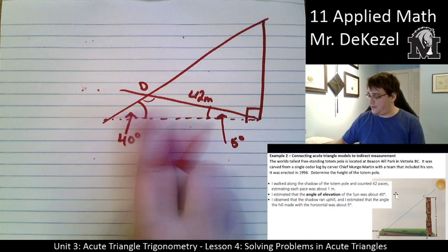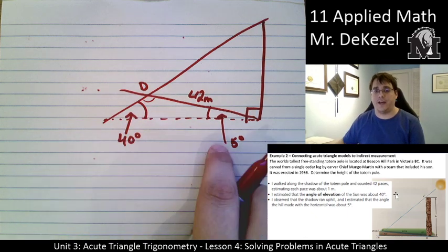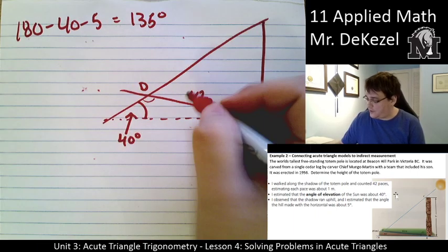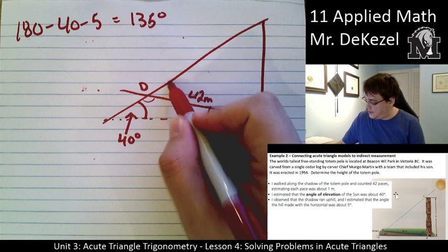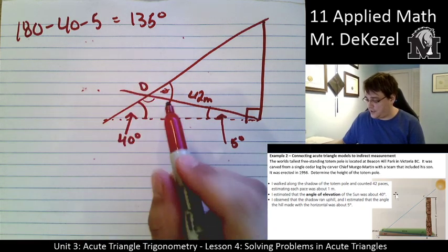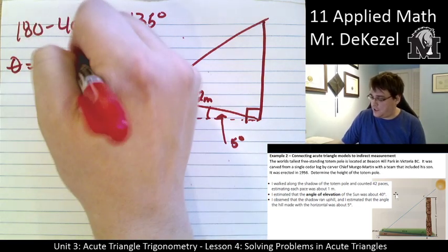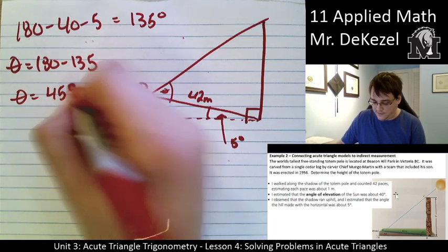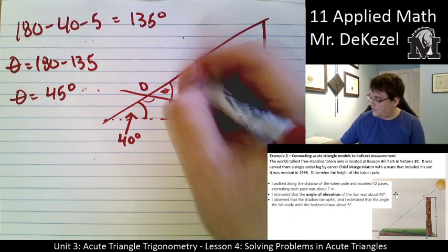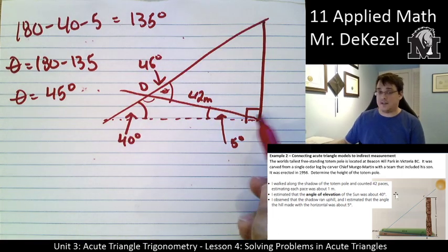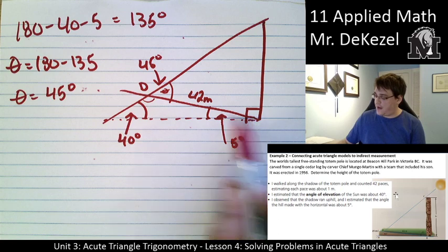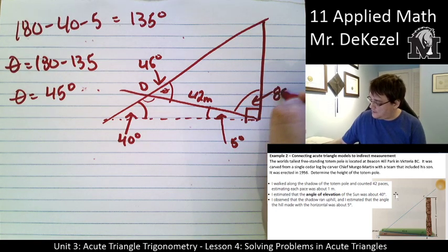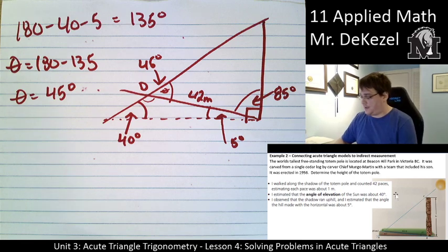To find out what this one is, I can use my 180 degree rule and subtract 40 and 5 from 180. So 180 subtract 40 subtract 5 gives us 135 degrees. And then to find this angle right here, which we'll call theta, I take 180 and subtract 135. So theta is equal to 180 subtract 135. Theta is equal to 45 degrees. Since this angle right here is 90 degrees and there's 5 degrees in this part of the triangle, I can find this angle. 90 minus 5 gives us 85 degrees.